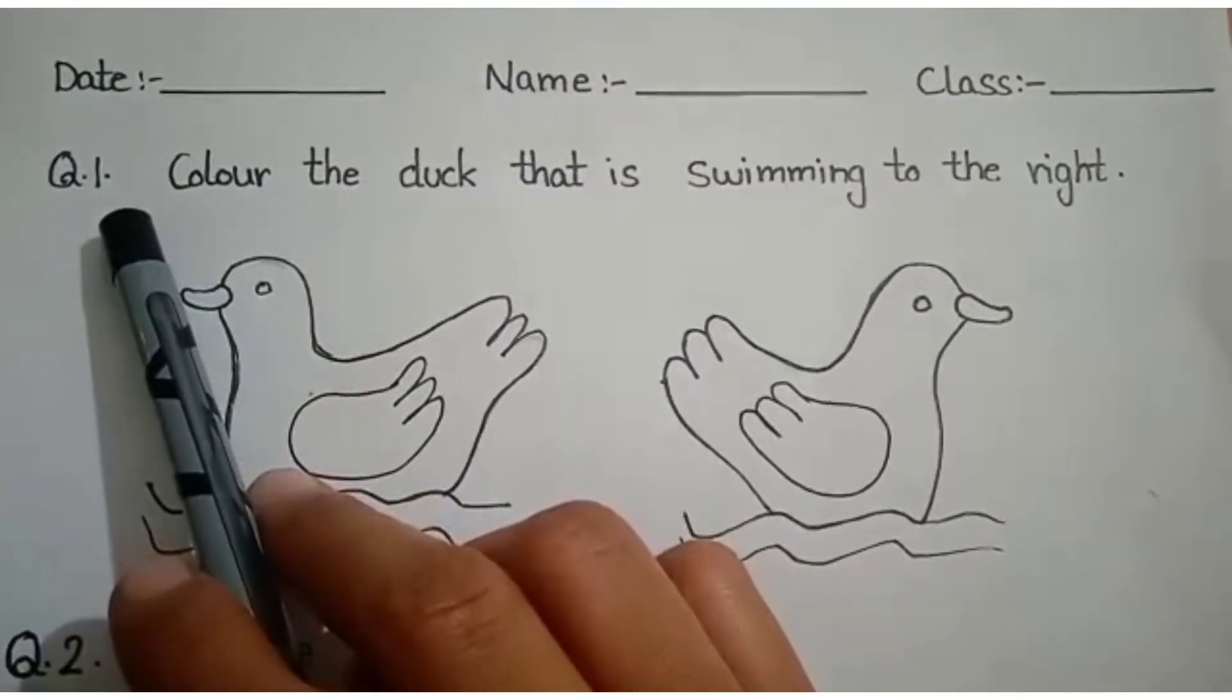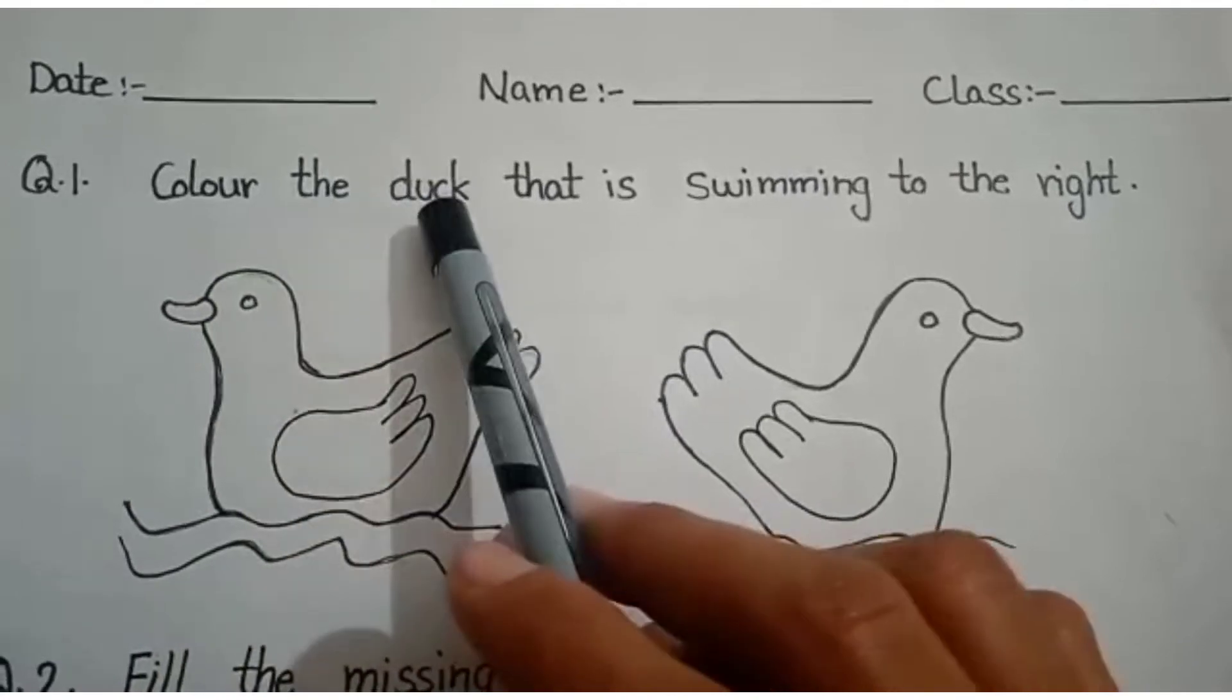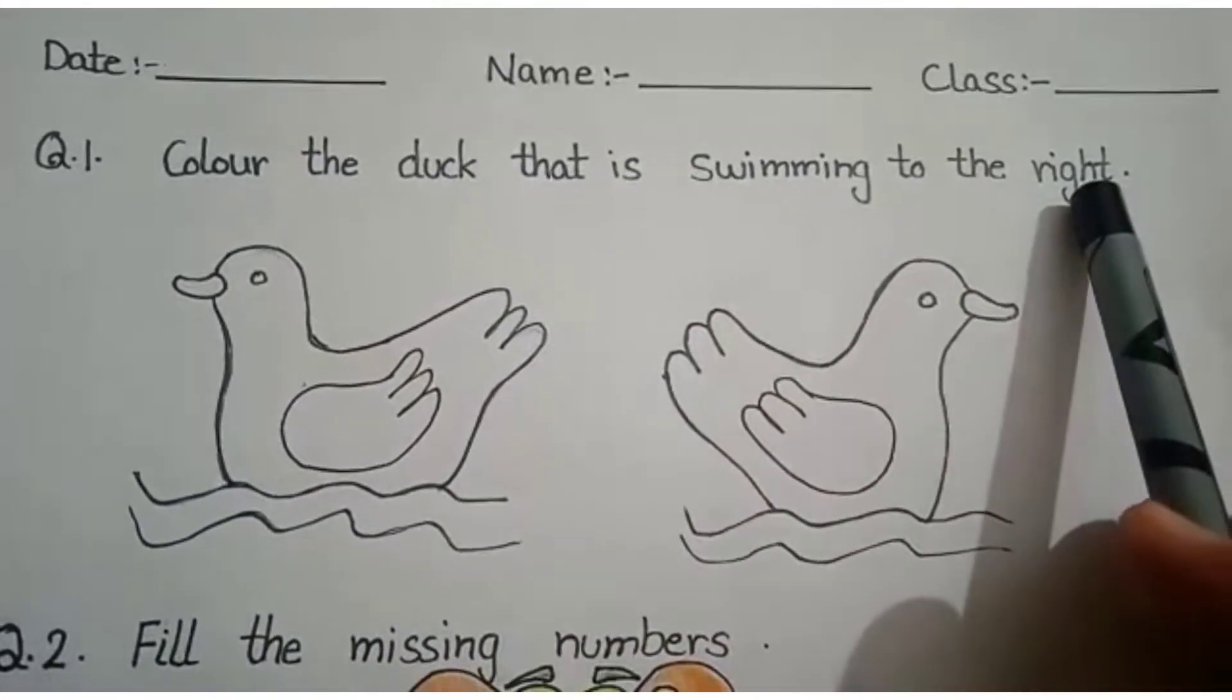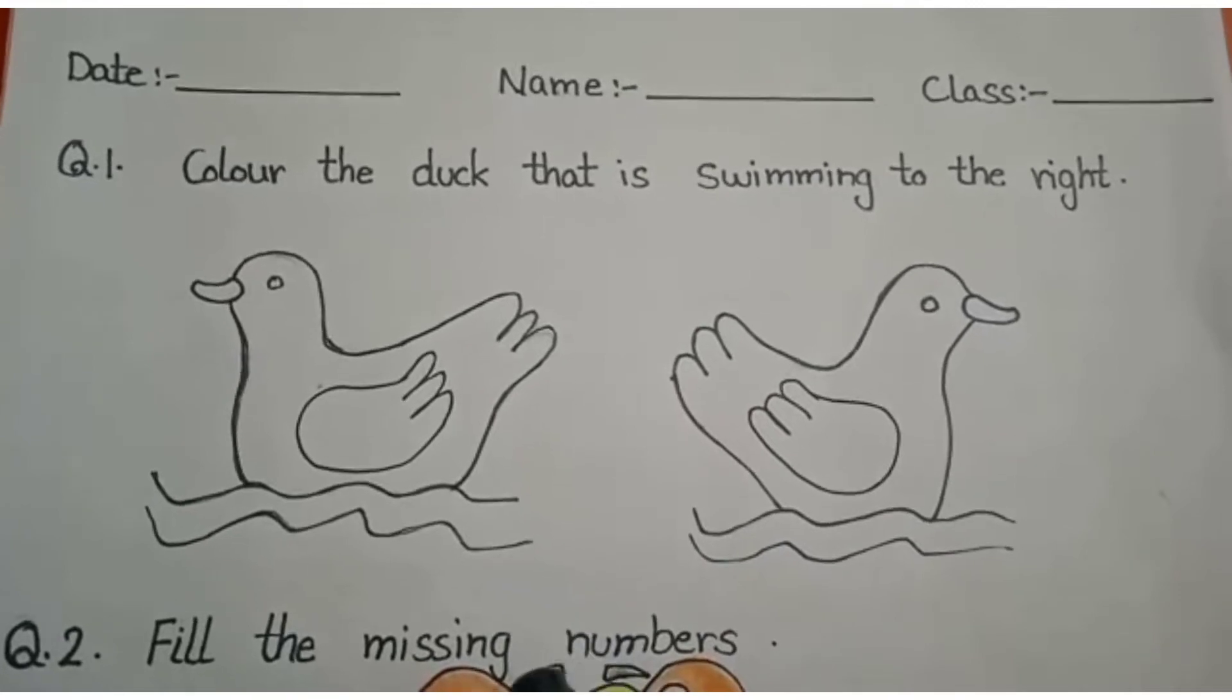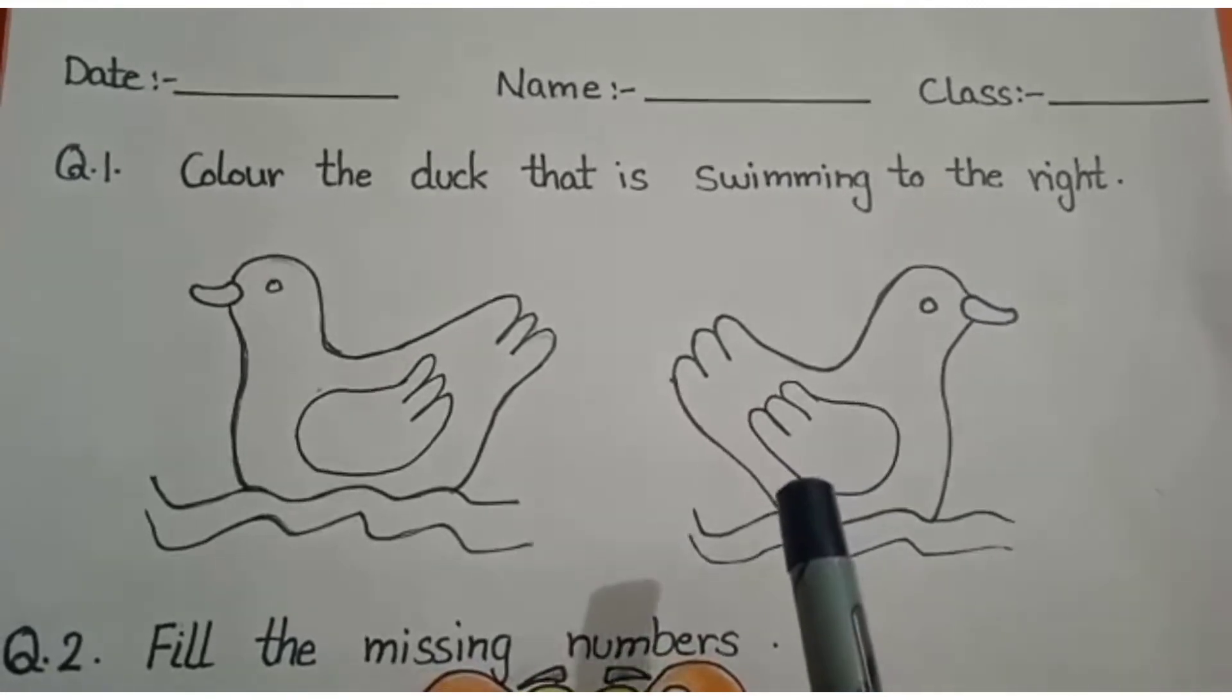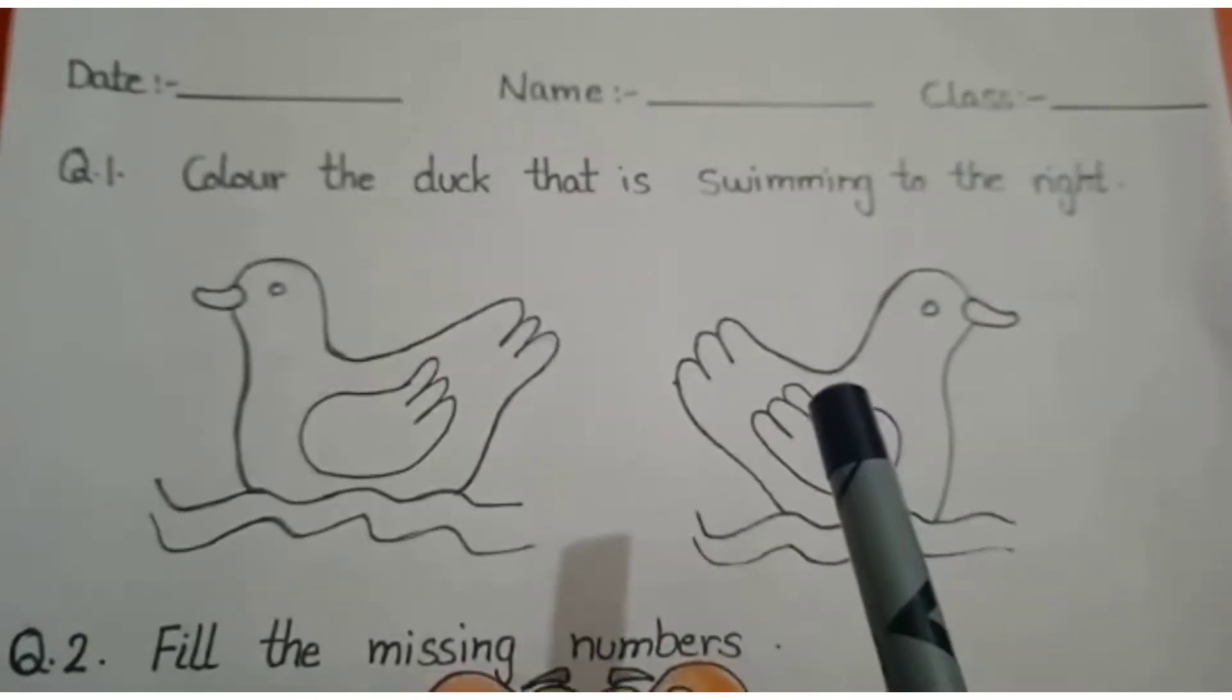Question number 1 is: Color the duck that is swimming to the right. First of all, you have to recognize which duck is on the left side and which is on the right side. After that, you have to color the duck which is swimming to the right side.